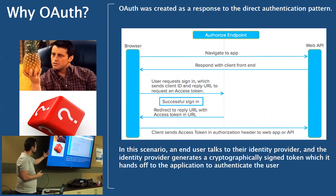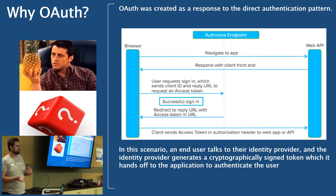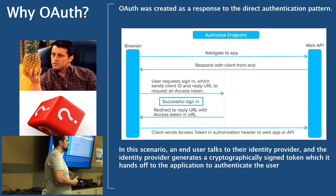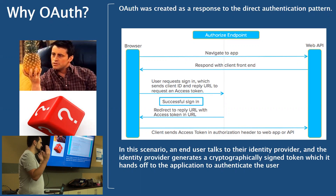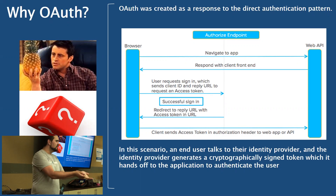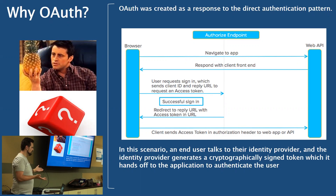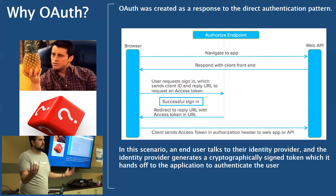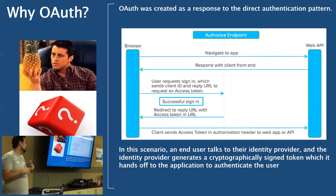So why OAuth? It's basically to solve a pretty bad problem that was happening prior to this invention. When you want to go into a service — Google or any of those applications that were first using OAuth — you'd have to type in your credentials. That's basically just handing the keys to the kingdom to someone and saying here are my username and password, and here's everything you would need to impersonate me. Over time, they evolved traditional ways of doing this and came up with more of an OAuth standard.